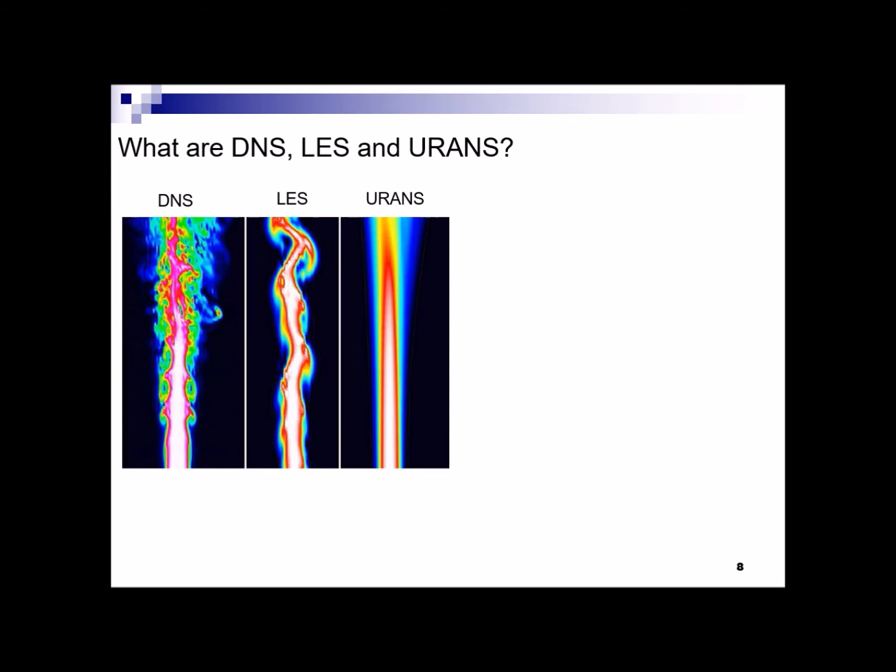As can be seen, DNS provides more details of the flow compared to other methods. However, why is that? It has to do with the nature of these methods. To understand the reason for this difference between these methods, let's see what each method actually is.